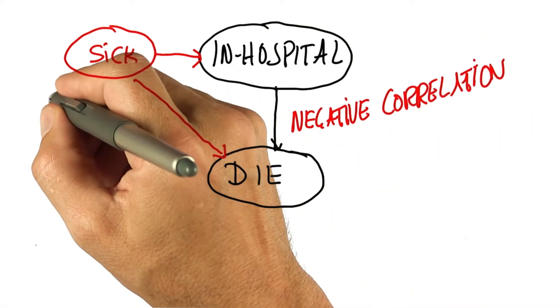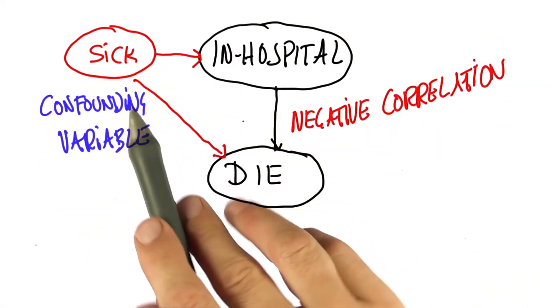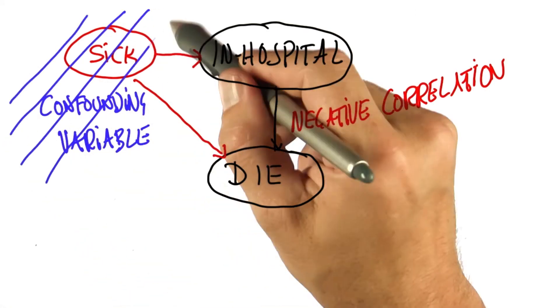In statistics, we call this a confounding variable. It is very tempting to just omit this from your data.